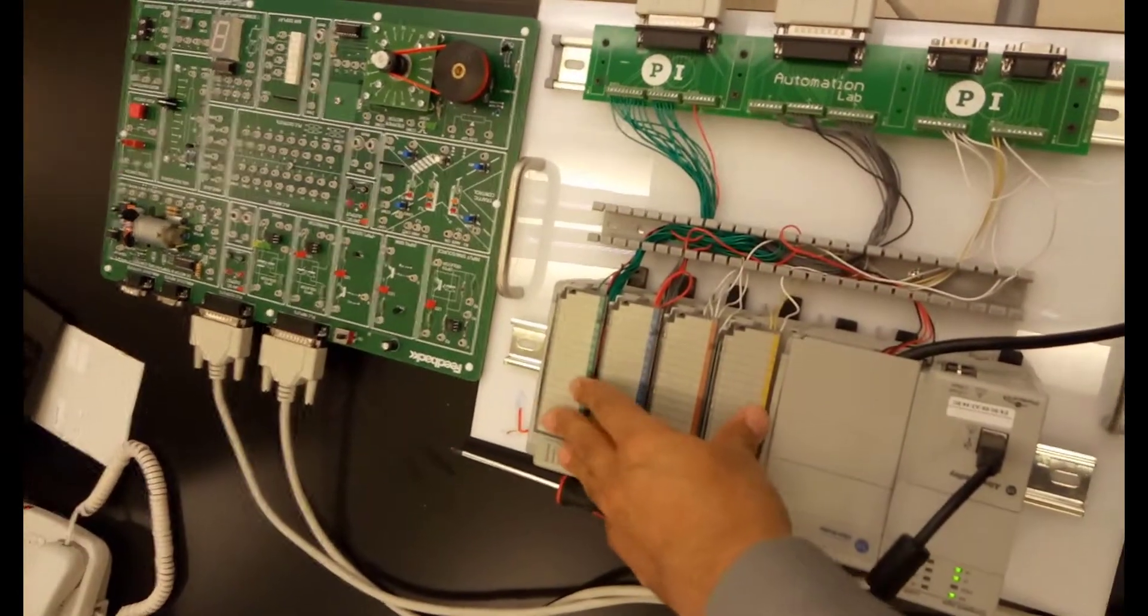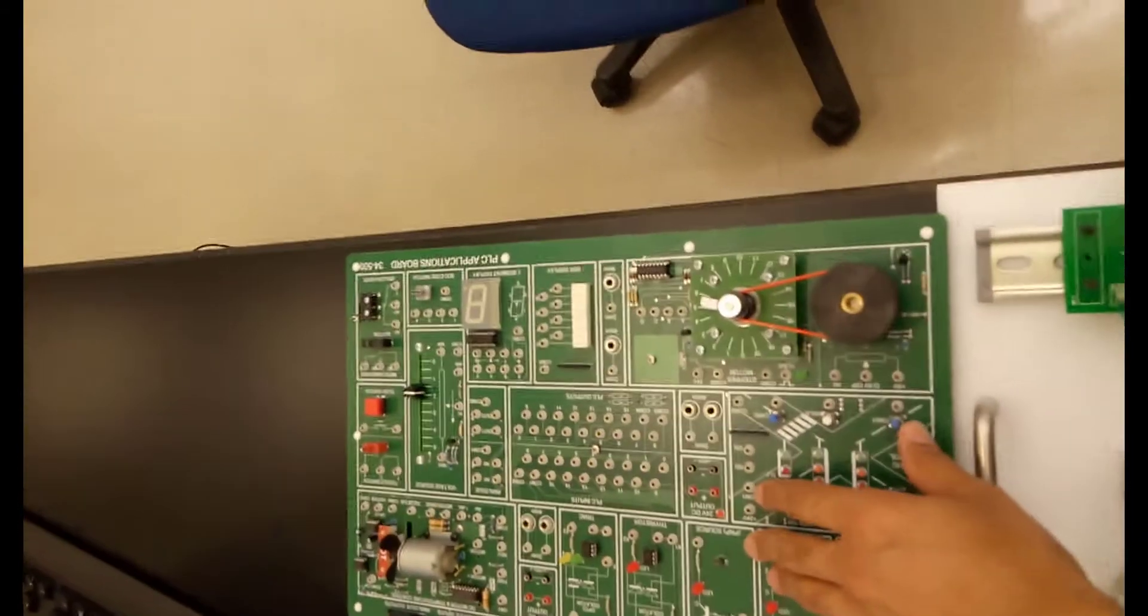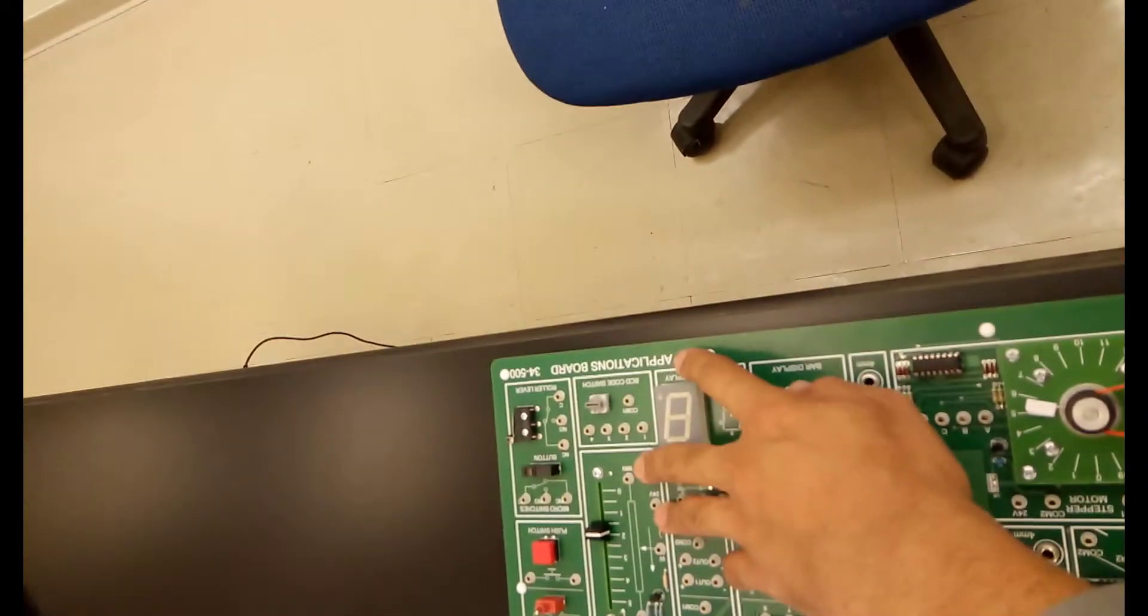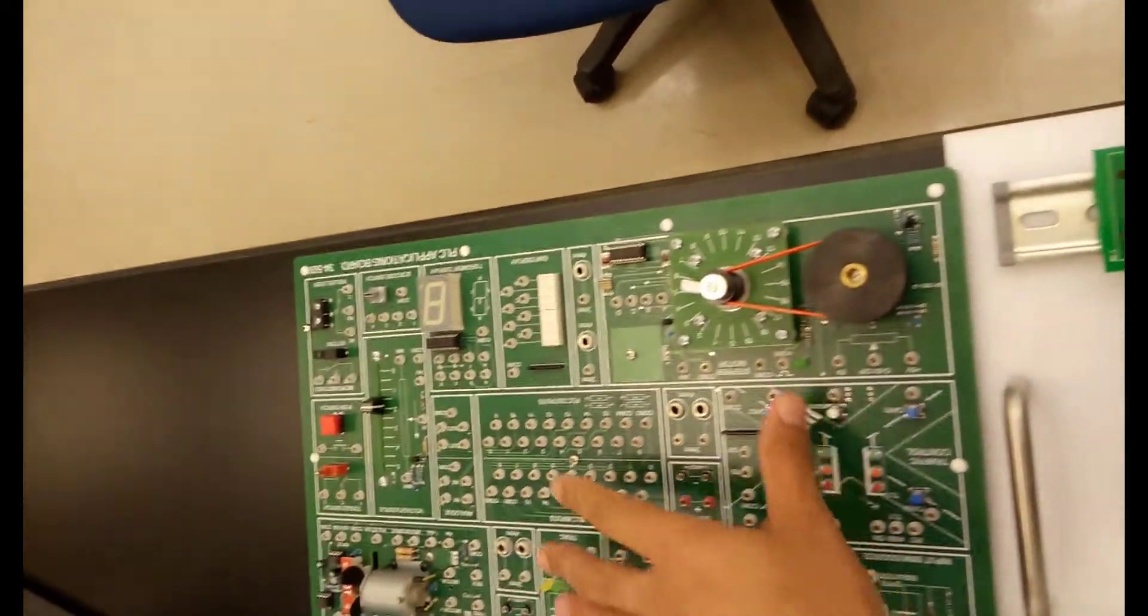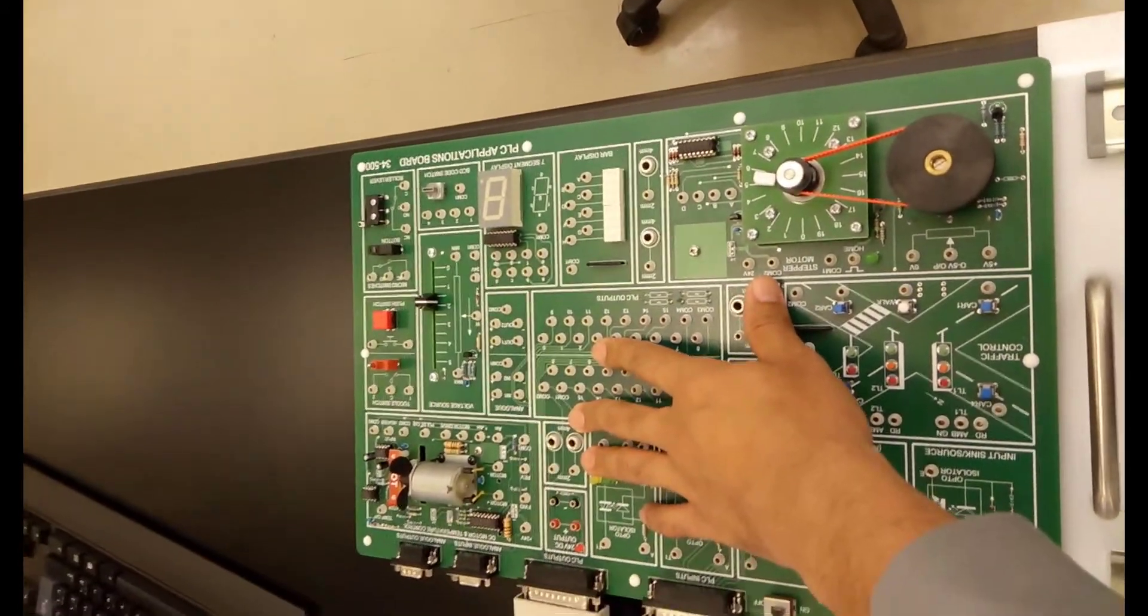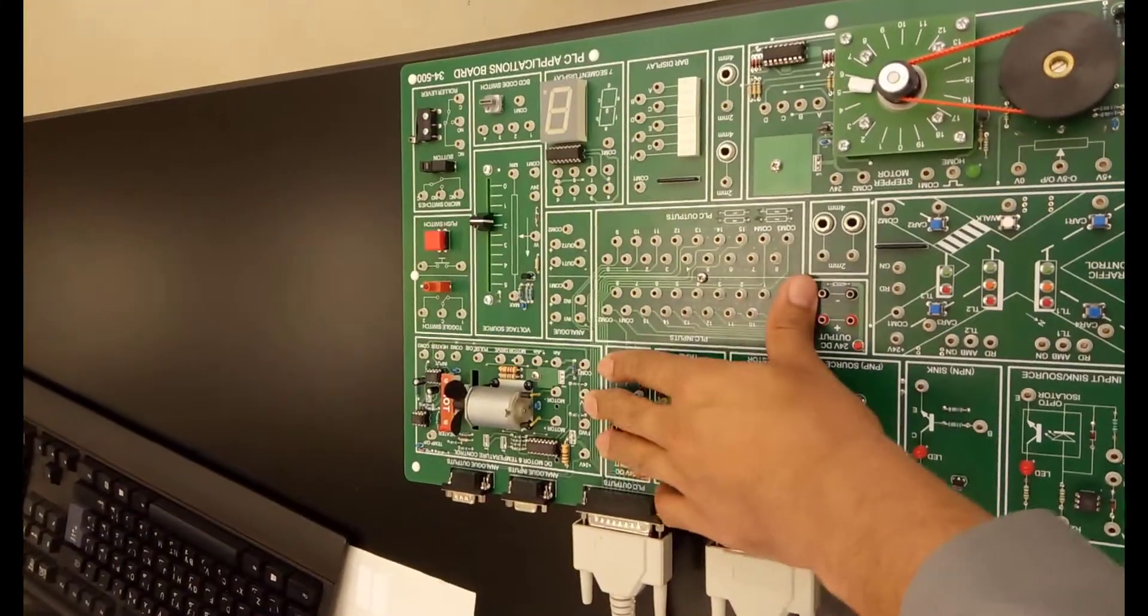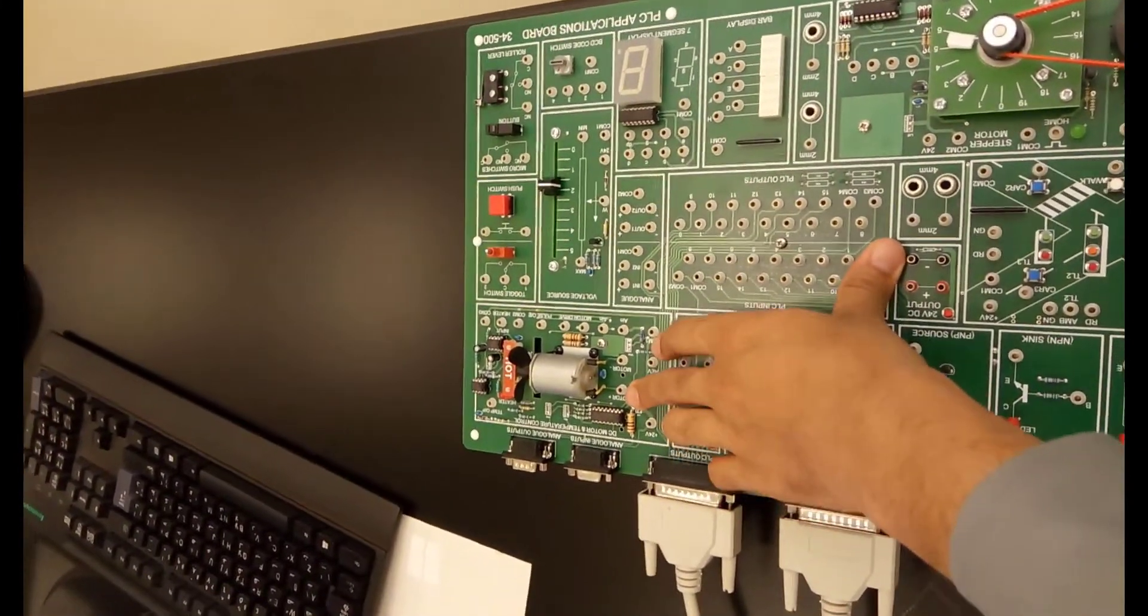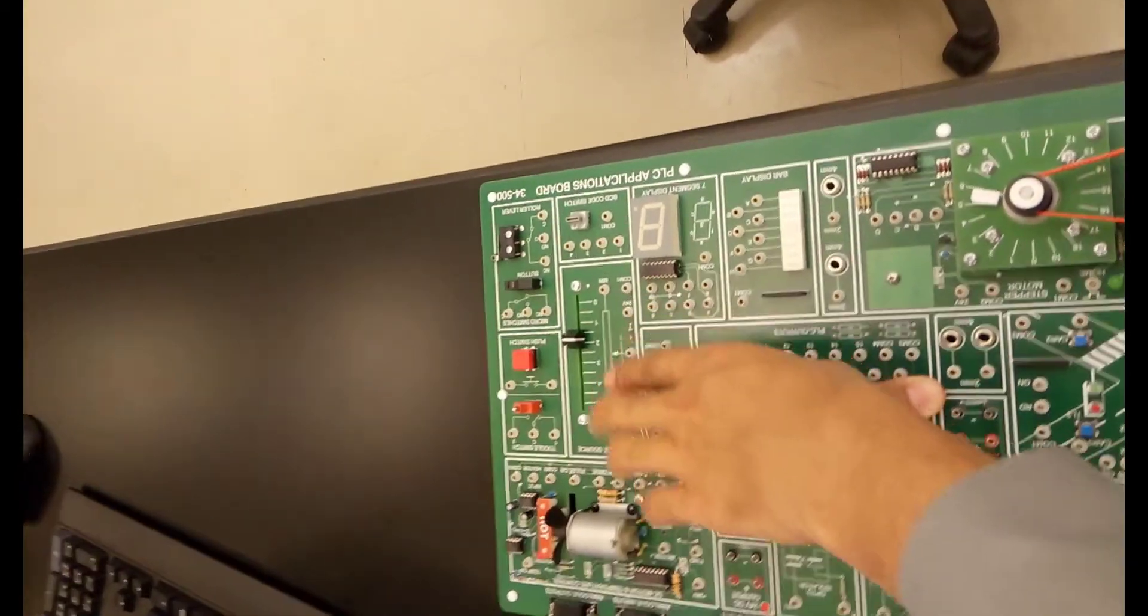This is very helpful for us. We have got a PLC application board 34-500 from Feedback. The beauty of this board is it has multiple circuits already built in. The DC motor and temperature control circuitry is already fabricated.